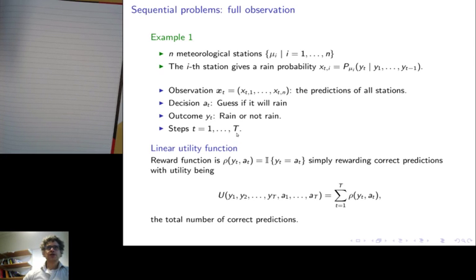Let's assume that we are just trying to predict rain. So we have a simple utility function, which is linear, where at every step t, we obtain a reward of 1 if we predict correctly that it rained or it didn't rain. Otherwise, we obtain zero. So our total utility for a specific sequence of observations, outcomes, and actions is the sum of rewards over time.